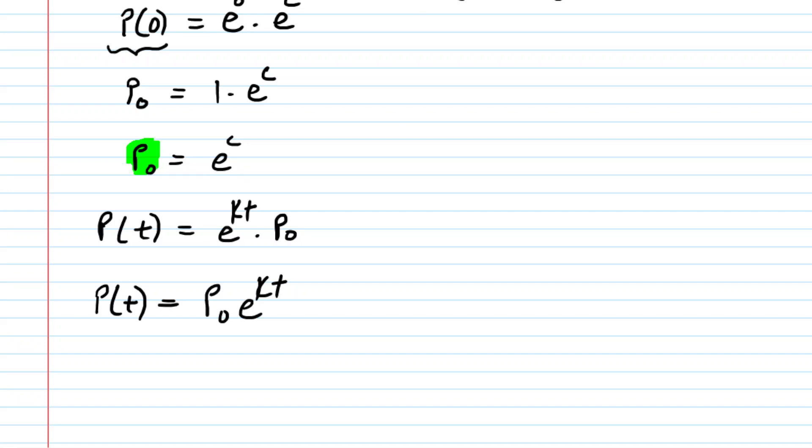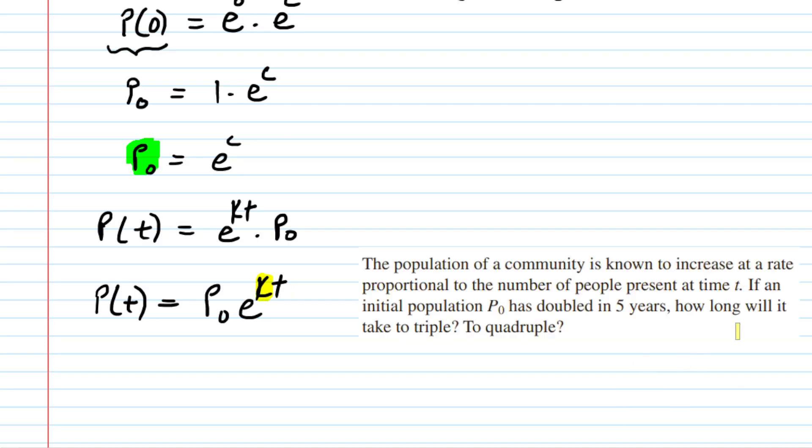Our next goal is to solve for the value of k. And to do that, let's go back and look at the question. We note that the initial population doubled in five years. So symbolically, we could say that P(5) is equal to twice the initial population.